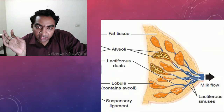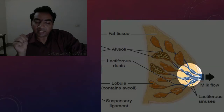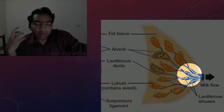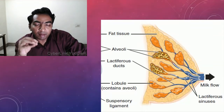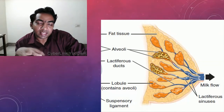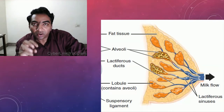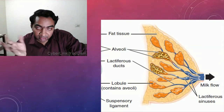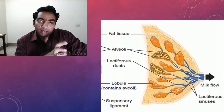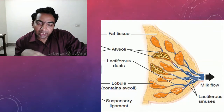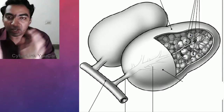At the end of the lactiferous ducts, before opening into the nipple, there is the lactiferous sinus. The practical importance of the lactiferous sinus is that it acts like a small reservoir for breast milk — otherwise the milk would always be draining. When the baby sucks, the milk from the lactiferous sinus enters the baby's mouth, and then the lactiferous sinus fills again.